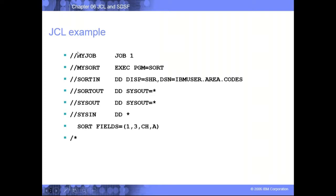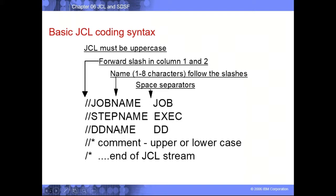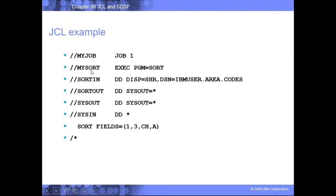Always remember that after double slash you have what's called a name field. This is called the operation field and these are called operands. The name field holds the job name on the first line, the step name on the exec line, and the DD name on the DD line. JCL is divided into three parts: job statement, step statement, and the DD stream.